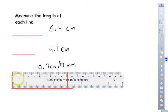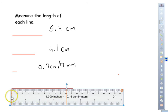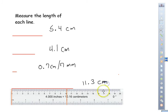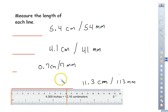You can also measure in millimeters — each centimeter mark equals 10, 20, 30, 40, 50 millimeters, and so on. The next line measures down to 11 centimeters and about three small marks, so approximately 11.3 centimeters, which would be 113 millimeters. You can measure in one unit and convert to the other — for example, 4.1 centimeters is 41 millimeters, and 5.4 centimeters is 54 millimeters.